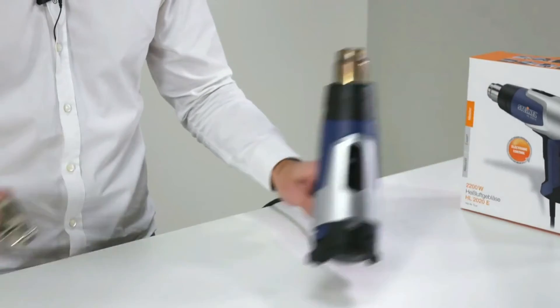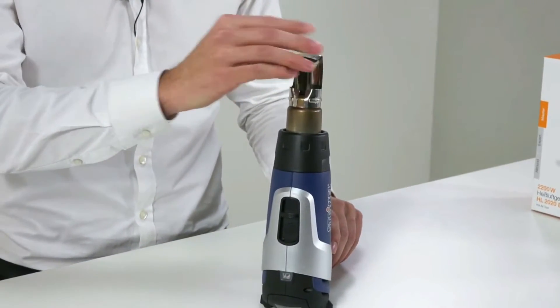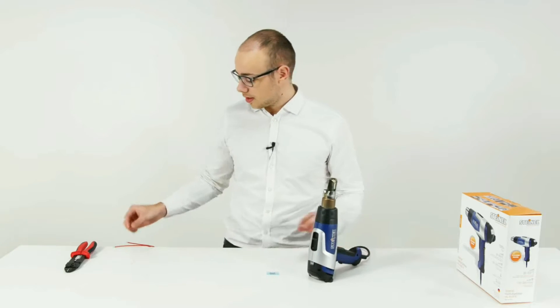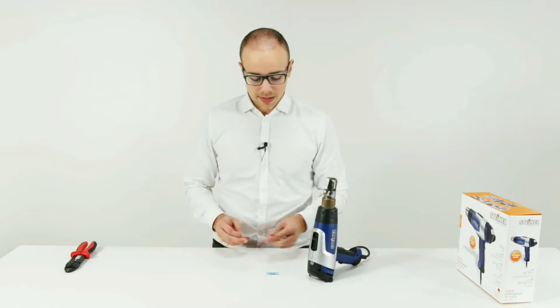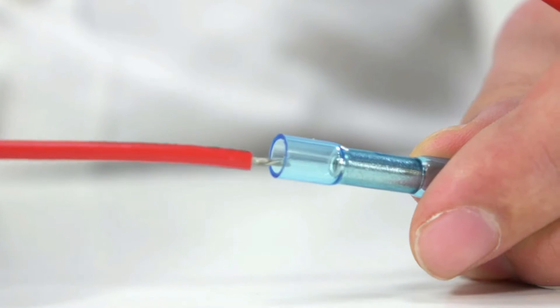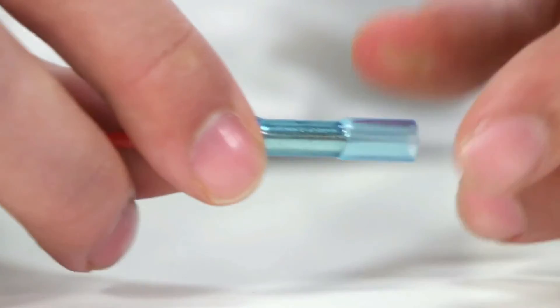Once that is done, we take the heat gun, connect the reflector nozzle, and take the ends of the wires which need to be crimp connected using this connector.